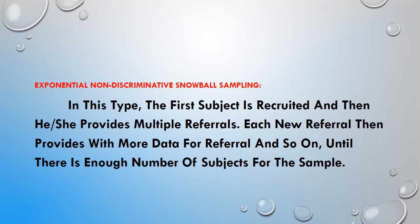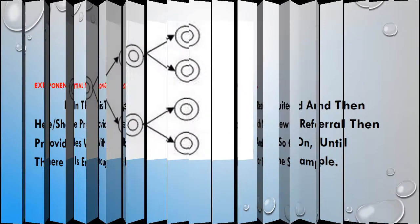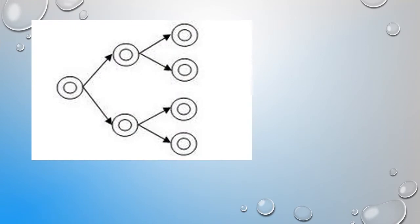The second type is exponential non-discriminative snowball sampling. Here, the first subject is recruited and then provides multiple references. Each new referral then provides more referrals and so on until there are enough subjects for the sample. Each sample member is asked to provide references of at least two similar subjects, because of which the sample size grows exponentially and a larger sample size can be achieved.